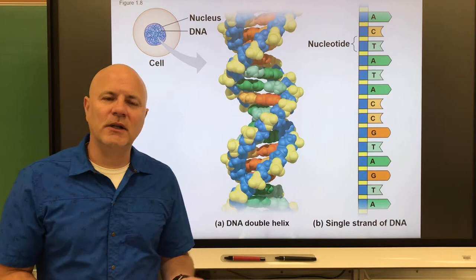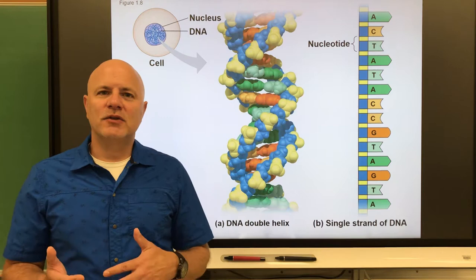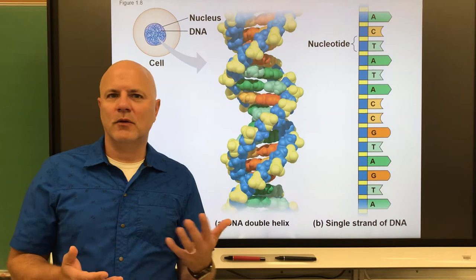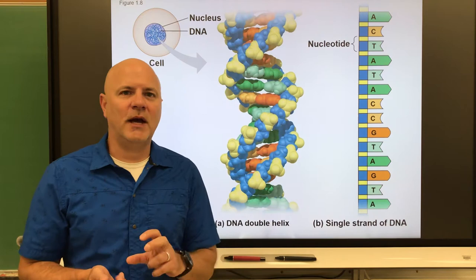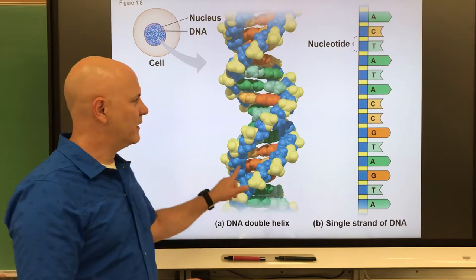We'll get into this later in the semester, but essentially we have 46 chromosomes — 23 we get from our mom and 23 we get from our dad. Those chromosomes carry our genes. When you give off a gamete, you're giving off either your mom's chromosome or your dad's chromosome — so you only pass off 23 chromosomes. It's either your mom's or dad's gene for that trait, not a mixture.